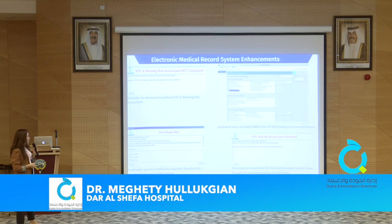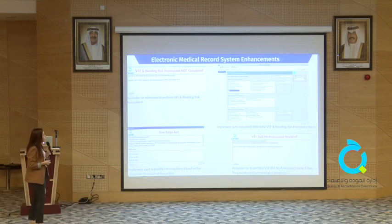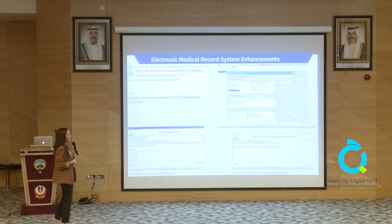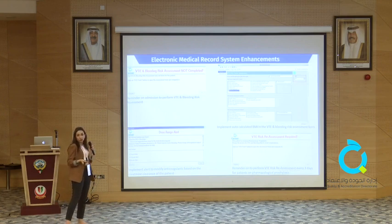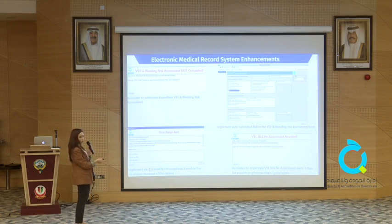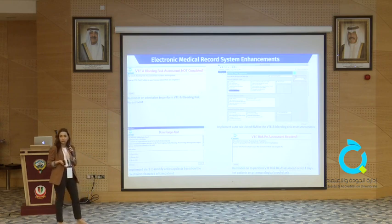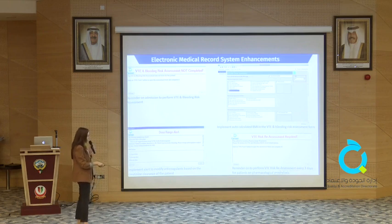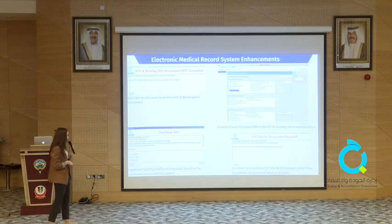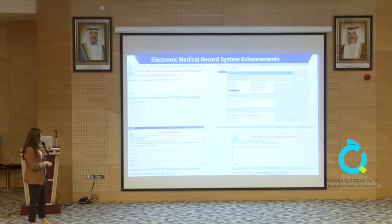We introduced the forms to EMR itself and then did further enhancements. For example, doctors were forgetting or disregarding BMI when it came to VTE risk assessment, so we introduced the concept of BMI being displayed inside the form itself right next to where the scores are calculated — a visual reminder for doctors to take BMI into consideration. Another alert is the reminder to do VTE reassessment after three days for patients on oral anticoagulants. The last enhancement is our dose range alerts: we have specific alerts related to patients' creatinine clearance. Whenever patients are nephrologically compromised and may have a low or suboptimal creatinine clearance, an alert fires for the doctor to modify anticoagulant doses accordingly.